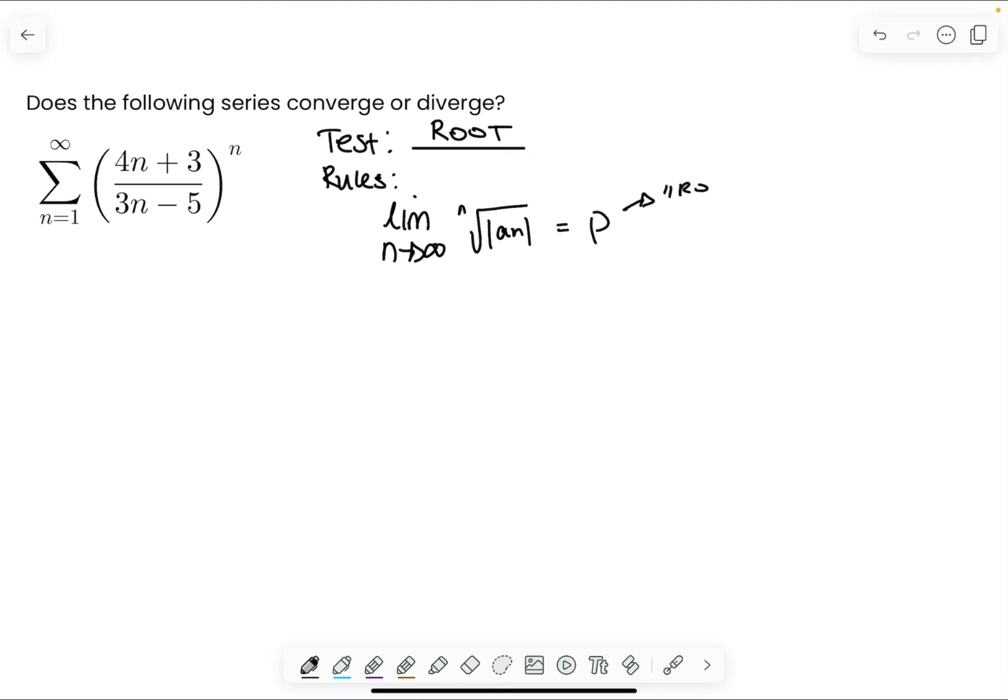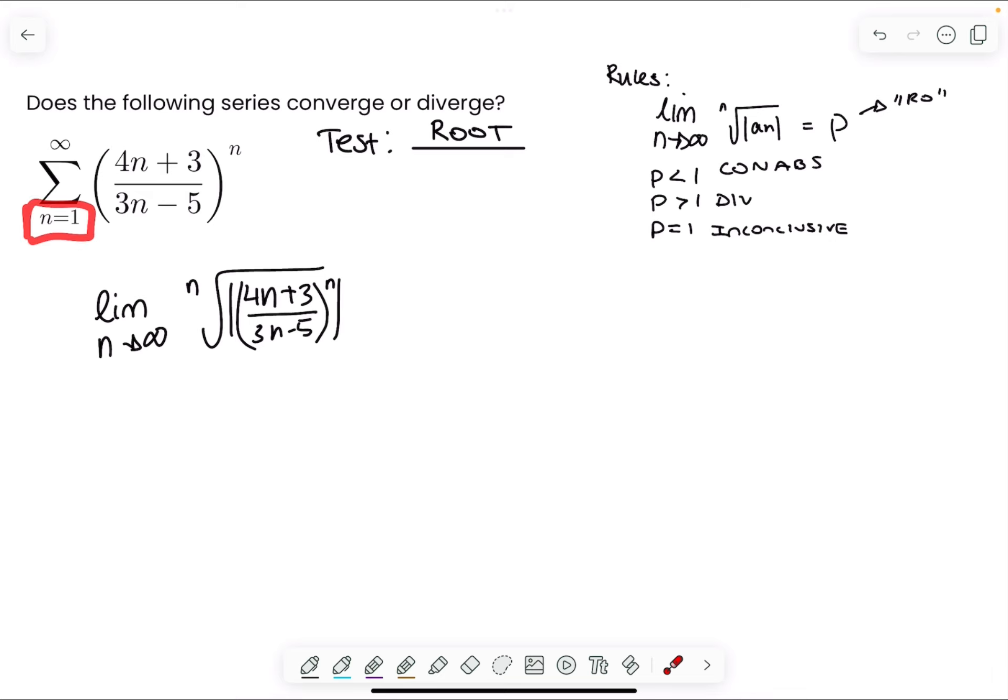So we're going to take the limit as n approaches infinity of the nth root of the absolute value of our sequence, which is this right here. Because n is equal to 1, all of the terms in our series are going to be greater than or equal to 1, so they're positive, and therefore this is already a positive series.